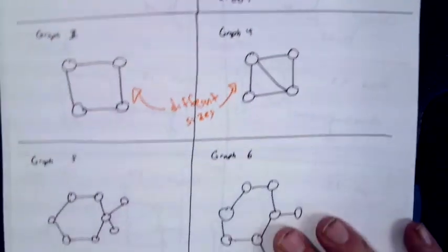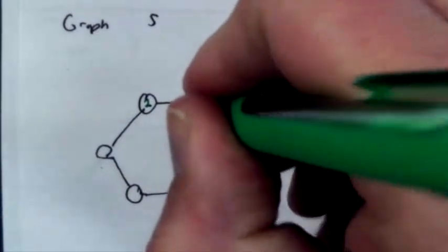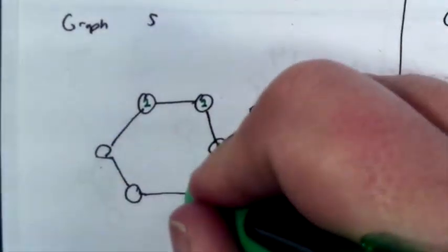What about why graph 5 and graph 6 are not isomorphic? Let's construct the degree sequences. So 2, 2, this has degree 1, 2, 3, 4, 2, 2.